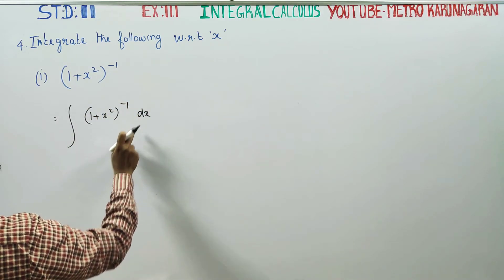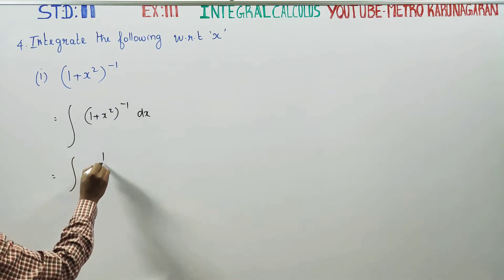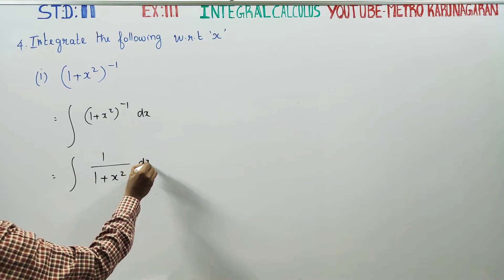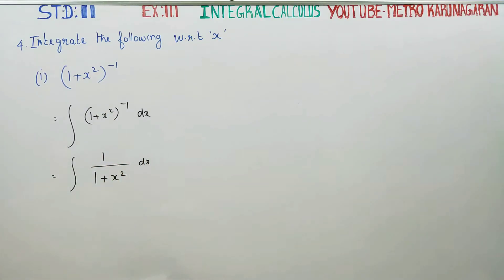Integration symbol putting, the integration of this can be written as 1/(1+x²) dx. This can be written as 1/(1+x²).